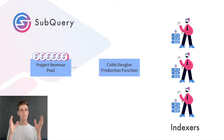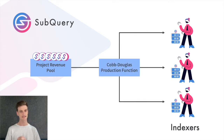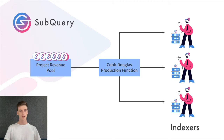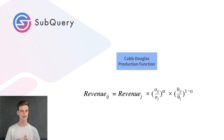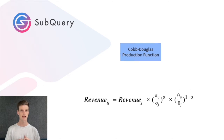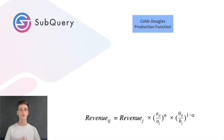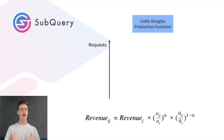It's split among the indexers that are participating in that SubQuery project, using something called the Cobb-Douglas production function. In simple terms, this means that the revenue is allocated to competing indexers as both a proportion of the work that they've done, or the requests that they've answered, and the amount that they have staked.